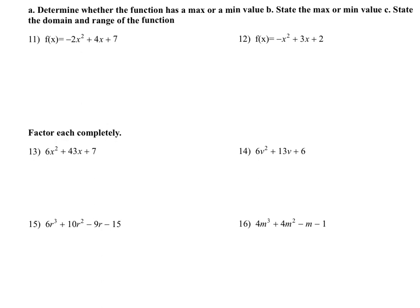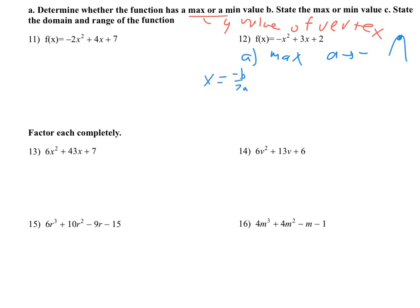Next, they want us to state the max or min value — that's always talking about the y-value of the vertex, so I have to find the vertex. It also asks whether it has a max or a min. This one has a max because a is negative — anytime a is negative it is a max. Think of it as an upside-down parabola, so the vertex is the highest point. To find the vertex, I'll find the x-value first using x equals negative b over 2a. With my numbers, that's negative 3 over 2 times negative 1, giving negative 3 over negative 2, which is just 3 over 2.